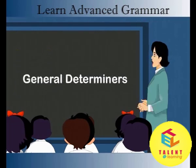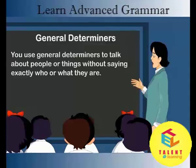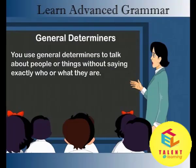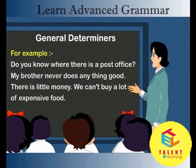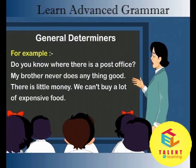General determiners. You use general determiners to talk about people or things without saying exactly who or what they are. For example: Do you know where there is a post office? My brother never does anything good. There is little money. We can't buy a lot of expensive food.